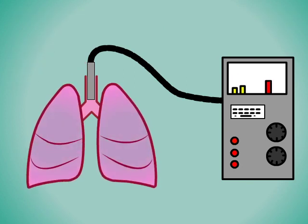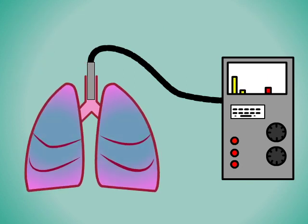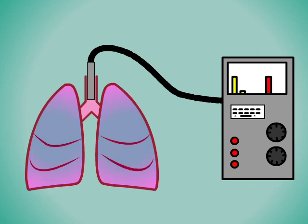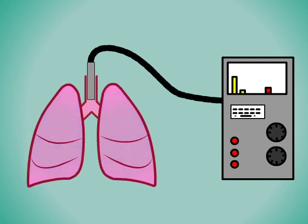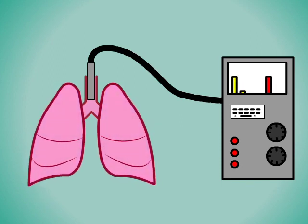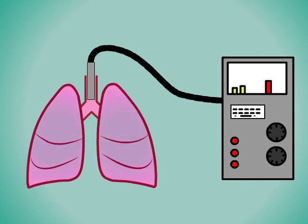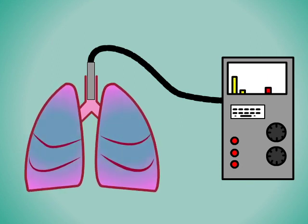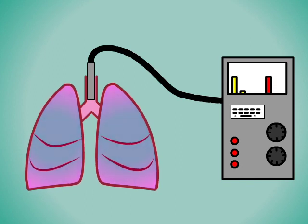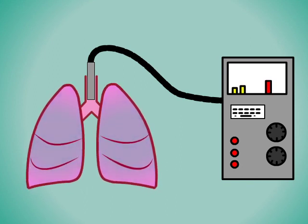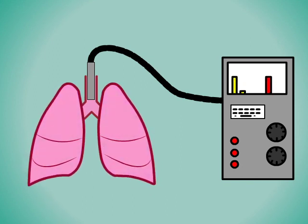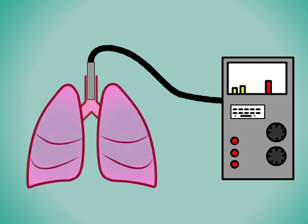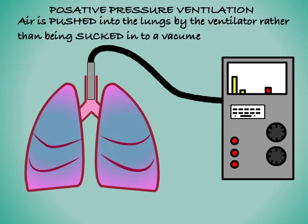As we've already mentioned, during normal breathing our lungs expand creating a vacuum — the lungs suck air in via negative pressure. During mechanical ventilation the lungs are expanded by pushing air in, in other words by exerting a positive pressure.